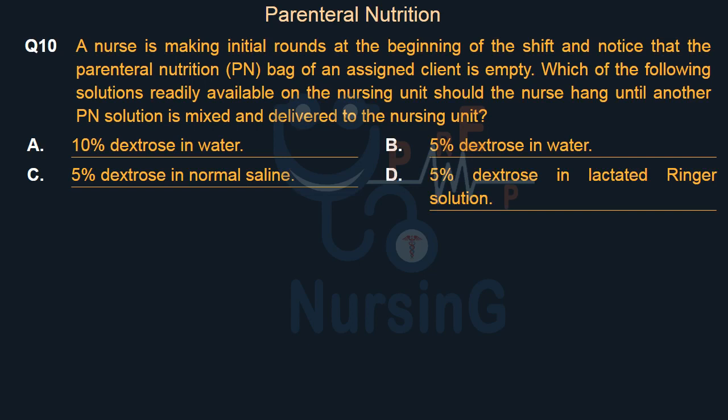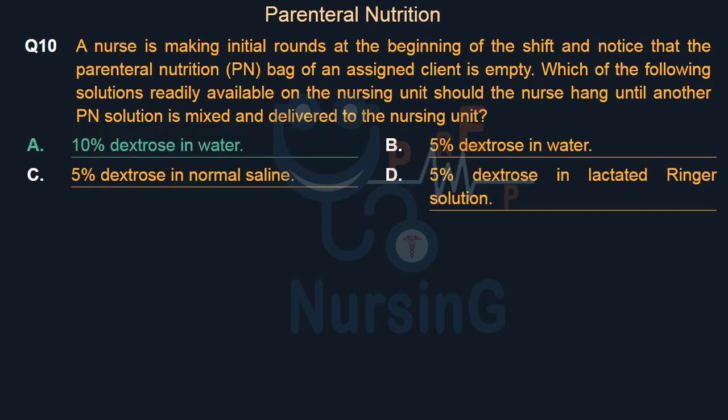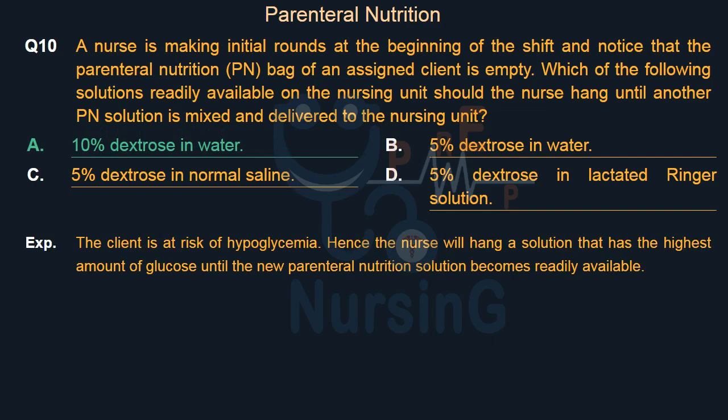Right answer is Option A: 10% dextrose in water. The client is at risk of hypoglycemia; hence the nurse will hang a solution that has the highest amount of glucose until the new parenteral nutrition solution becomes readily available.